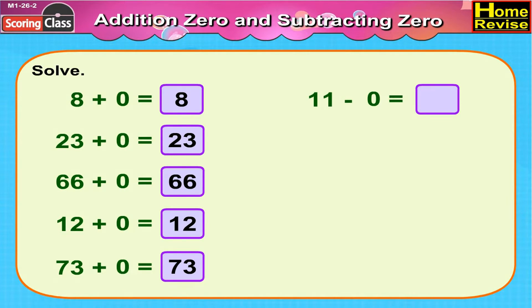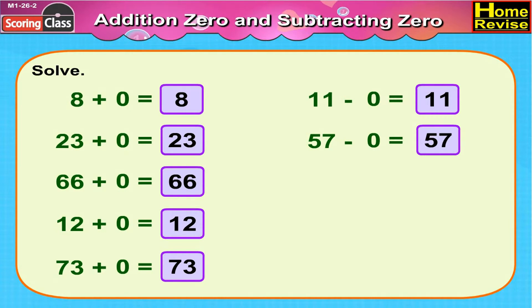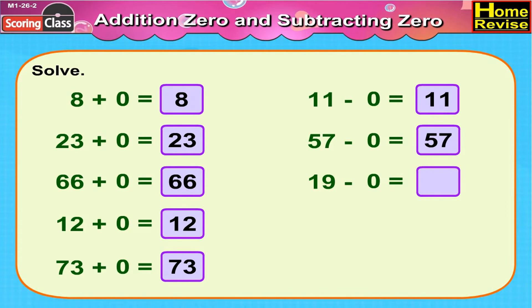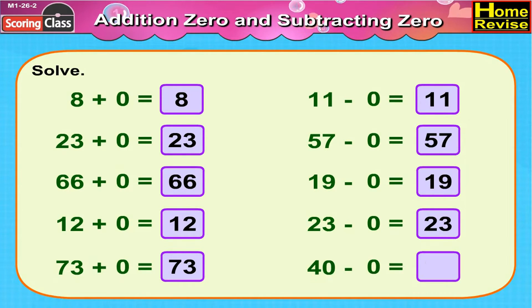Now, 11 minus zero is — 11 minus zero is 11. Tell me, 57 minus zero would be what? Yes, 57 minus zero is 57. 19 minus zero — you are correct, 19 minus zero is 19. 23 minus zero — yes, 23 minus zero is 23. 40 minus zero — you are right again, 40 minus zero is 40.